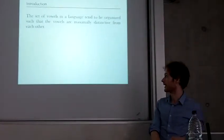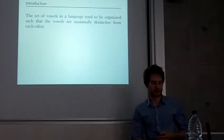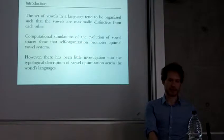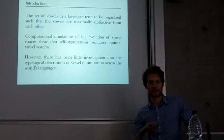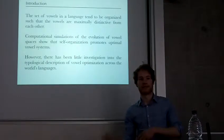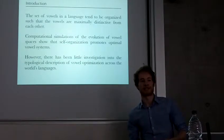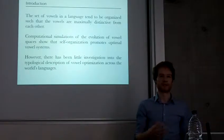Starting out with the idea that the set of vowels in a language tend to be organized such that they're maximally distinctive from one another. Computational simulations of the evolution of vowel spaces show that self-optimization promotes optimal vowel systems. But there's been little investigation into typological description of vowel space optimization across the world's languages. We don't know whether, say, Swahili is more or less optimized than English. Answering that question could have implications for evolutionary linguistics in the sense that if this language is very optimized, maybe there's some underlying linguistic or social reason for that.